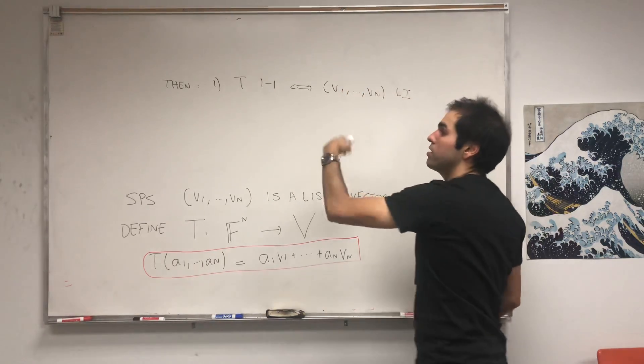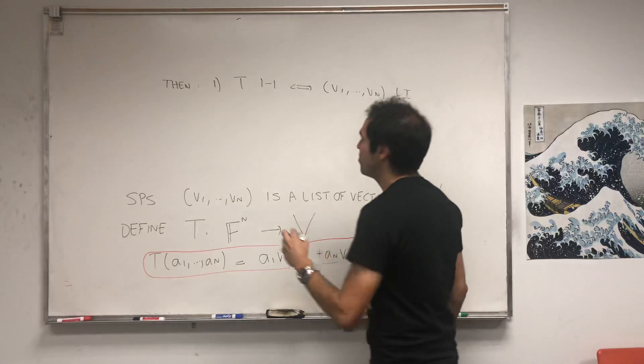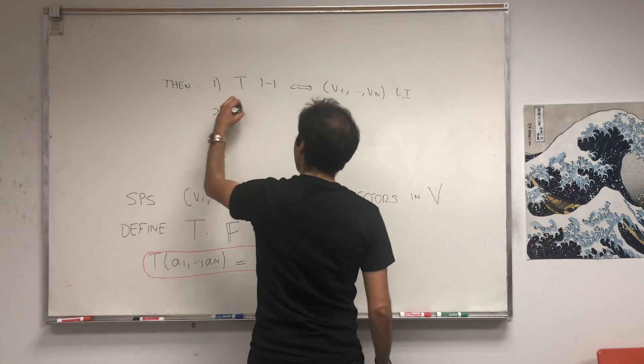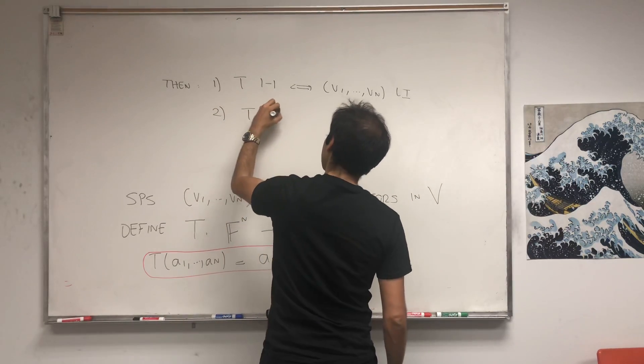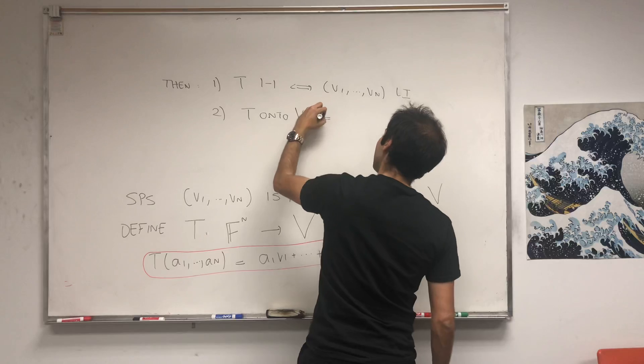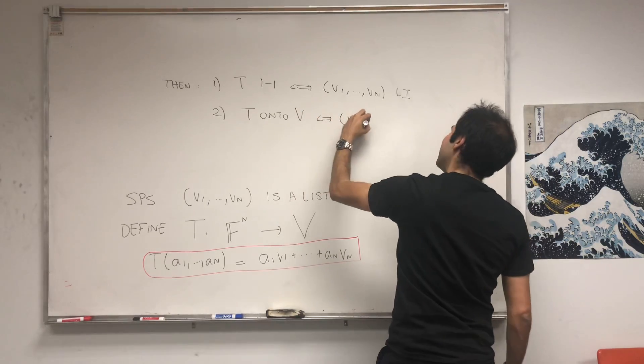And again, for lists, the definition is exactly the same for linear independence. And t is onto v if and only if the list spans v.